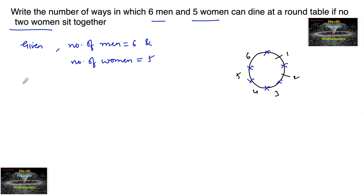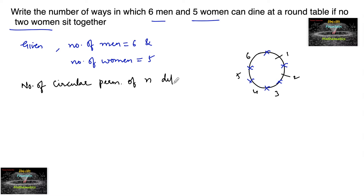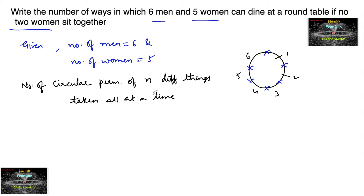We know that the number of circular permutations of n different things taken all at a time is equal to (n minus one) factorial.